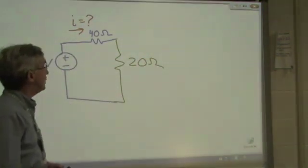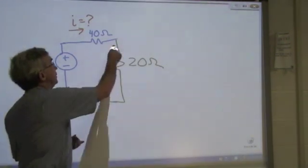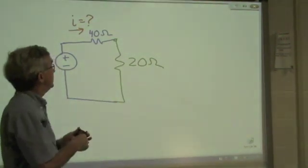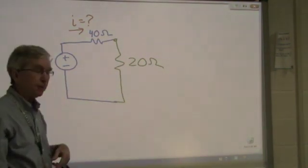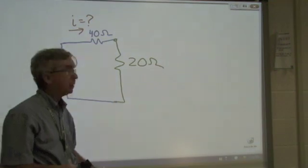Now, moving along, I see that, oh, now that I've done that, this 40 ohm resistor is in series with the 20 ohm resistor, so that I can combine them. R1 plus R2 is equal to 60 ohms.